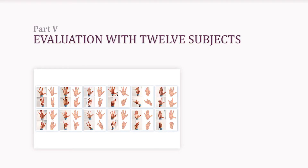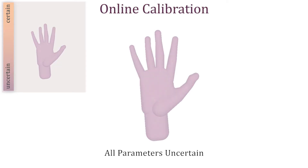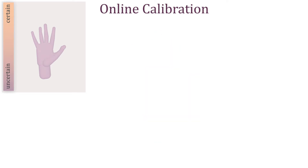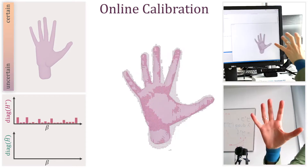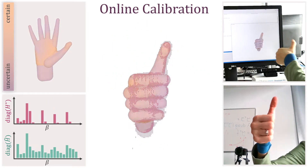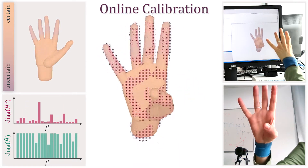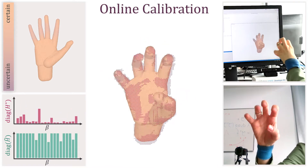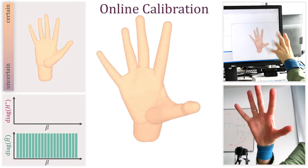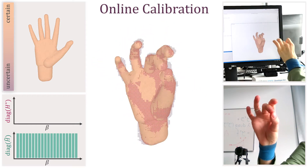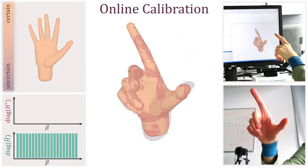We now present our complete online calibration algorithm. The surface of the model is colour-coded to visualise certainty, and we also display the per-frame and accumulated certainties over time. In the beginning of the sequence, all the parameters are uncertain. Their confidence grows as information becomes available. Once certainty reaches a predefined threshold, the calibration phase is complete. The remainder of the sequence is tracked with a fixed personalised model, making the tracking faster and more robust.